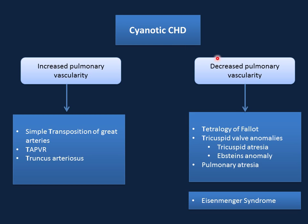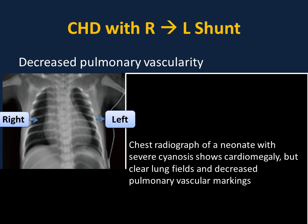Cyanotic congenital heart defects are classified according to the degree of pulmonary vascularity on chest x-ray. Those associated with decreased pulmonary vascularity or decreased pulmonary blood flow include: simple transposition of great arteries, total anomalous pulmonary venous return or connection, and truncus arteriosus.